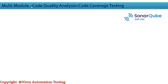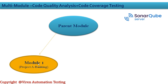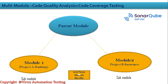Let me explain the multi-module concept. We have the parent module — we call it the parent project — and this project has all the code we require. The parent module also has the pom.xml file. We have sub-modules: module one is project A, related to your banking application, and module two is project B, related to your insurance application. So at a time you are working on two applications — banking and insurance — and they are called sub-modules under the parent module.